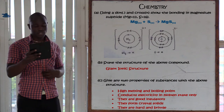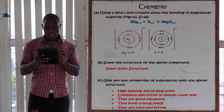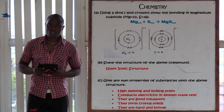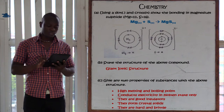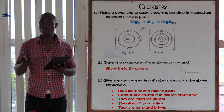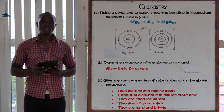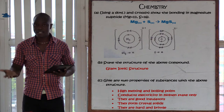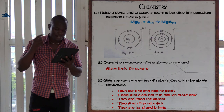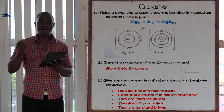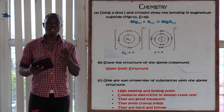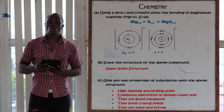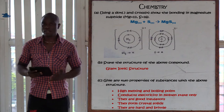Question 16C asks for two properties of substances with the giant ionic structure. If you did not correctly identify the structure in part B, it will be very difficult to answer part C.